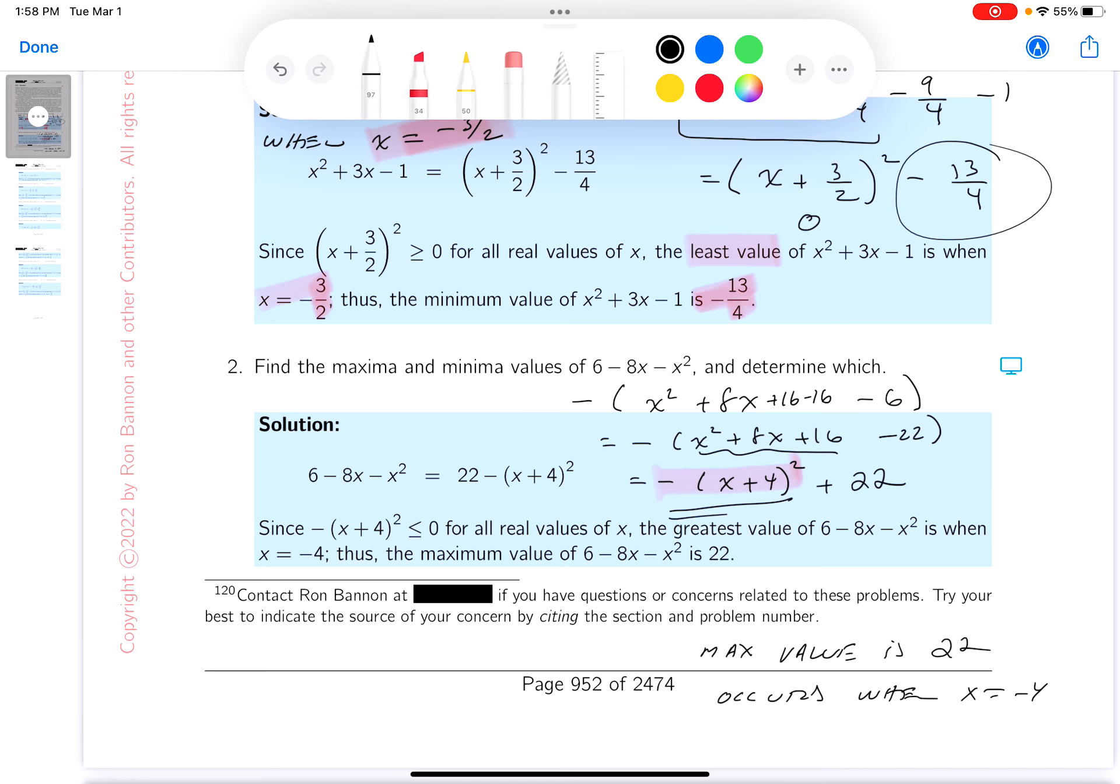Again, you need to think about this. You have to think carefully about that. If you made that 0, you'd get minus 4, but any other number besides minus 4 would make this a negative number, which would certainly take away from the 22. So 22 is the max value.